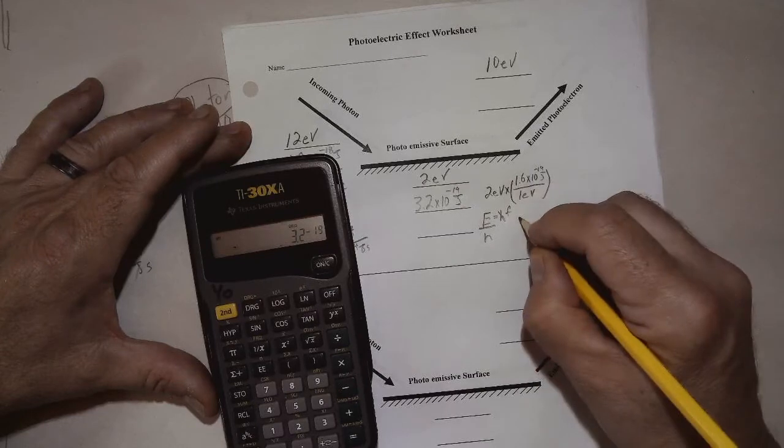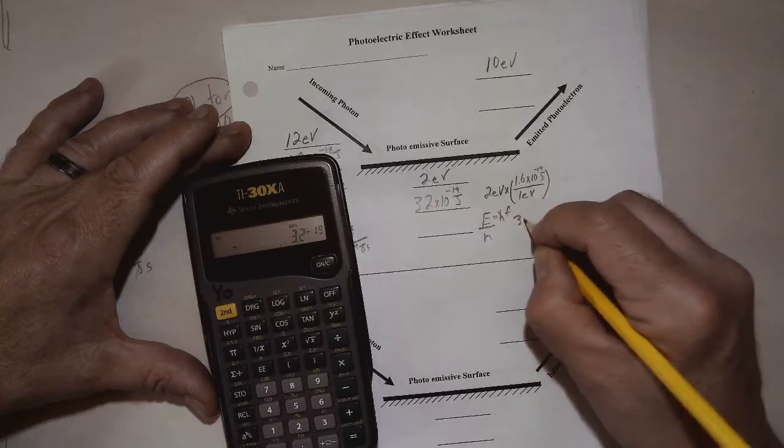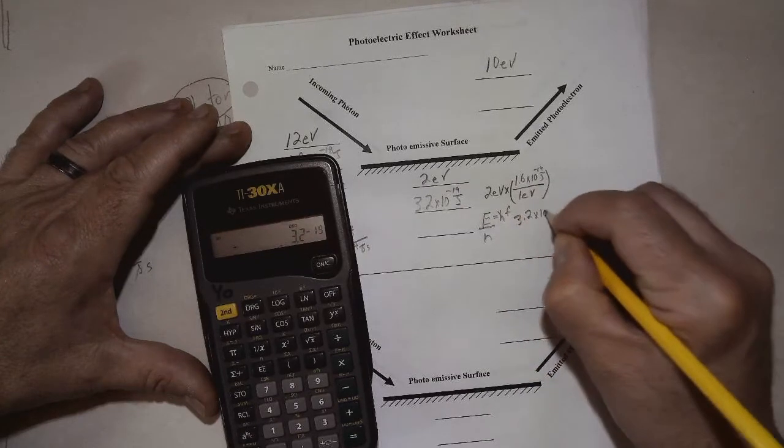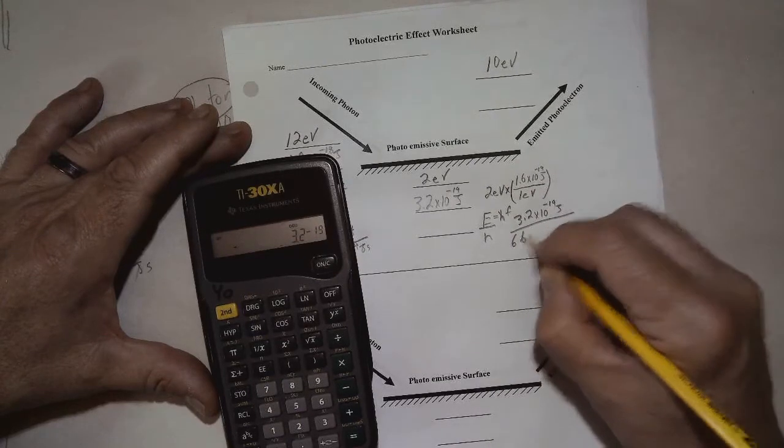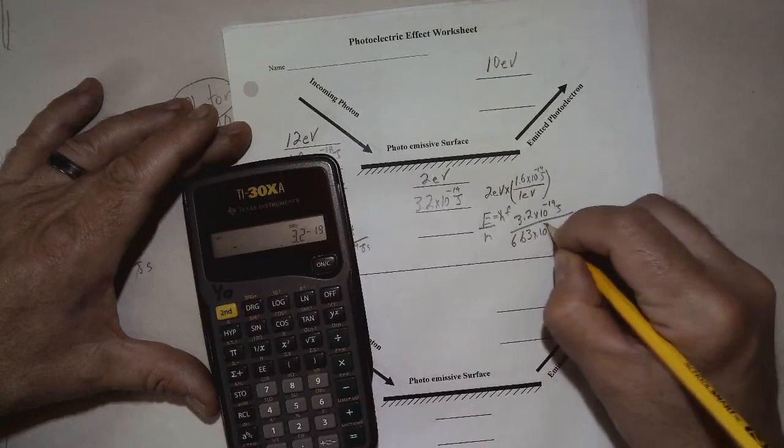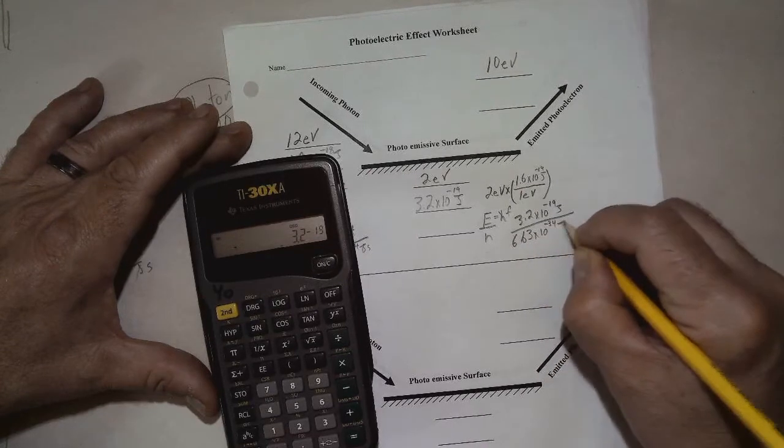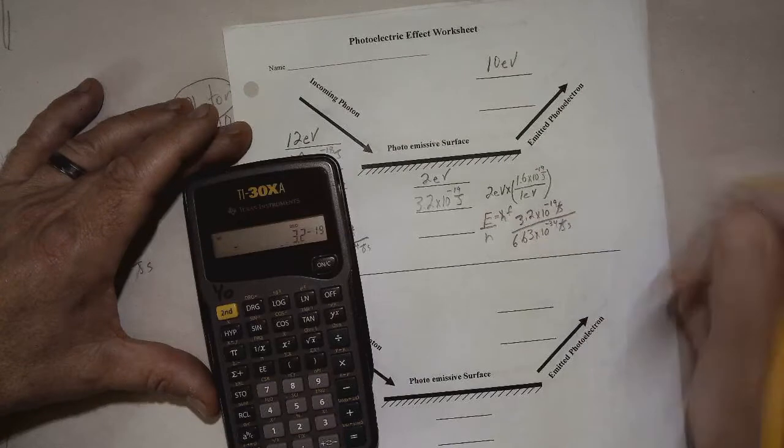So we have the energy, which is 3.2 times 10 to the minus 19th joules, dividing by 6.63 times 10 to the minus 34th joule seconds. Again, that leaves us in hertz.